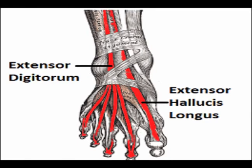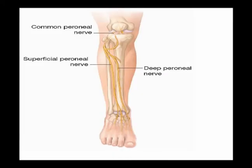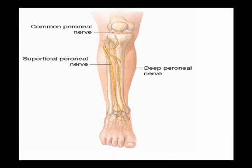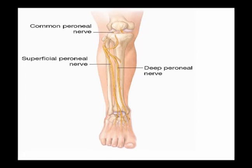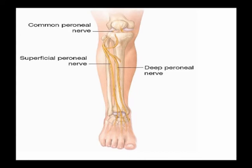Its concentric action — think about its insertion and its origin — is ankle dorsiflexion and extension of toes two through five. The extensor digitorum longus is innervated by the deep fibular nerve, also known as the deep peroneal nerve, at vertebral levels L4, L5, and S1.